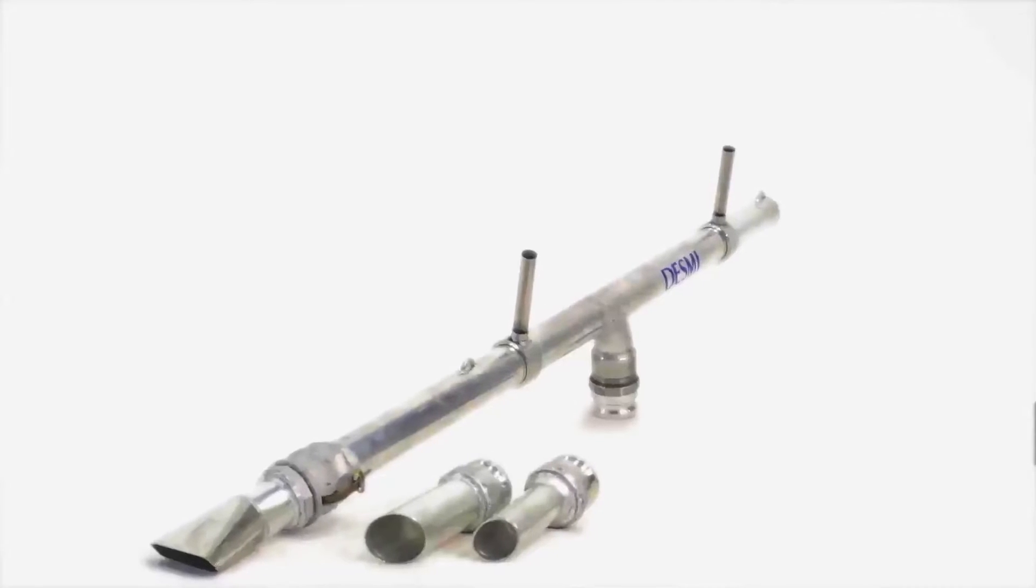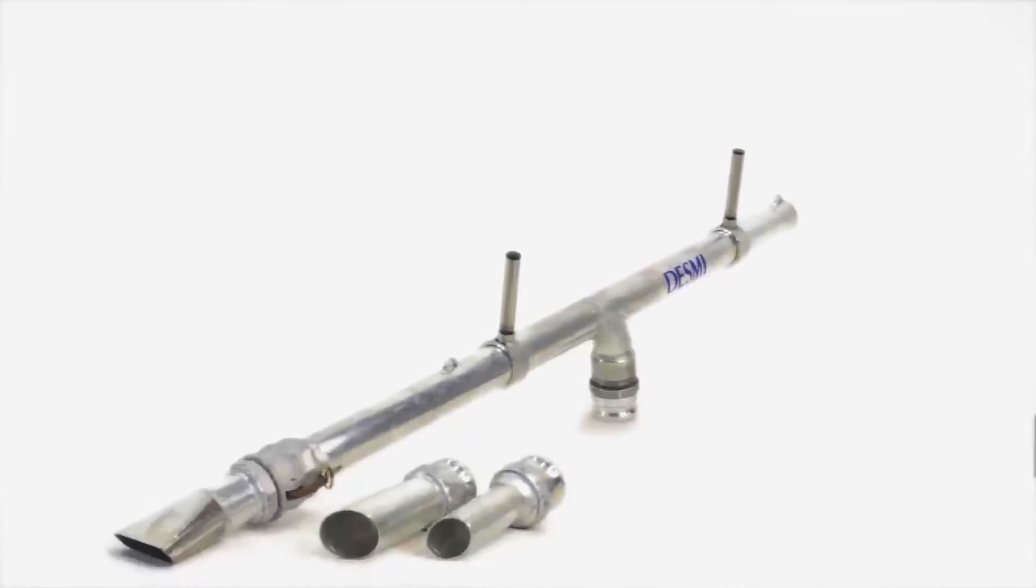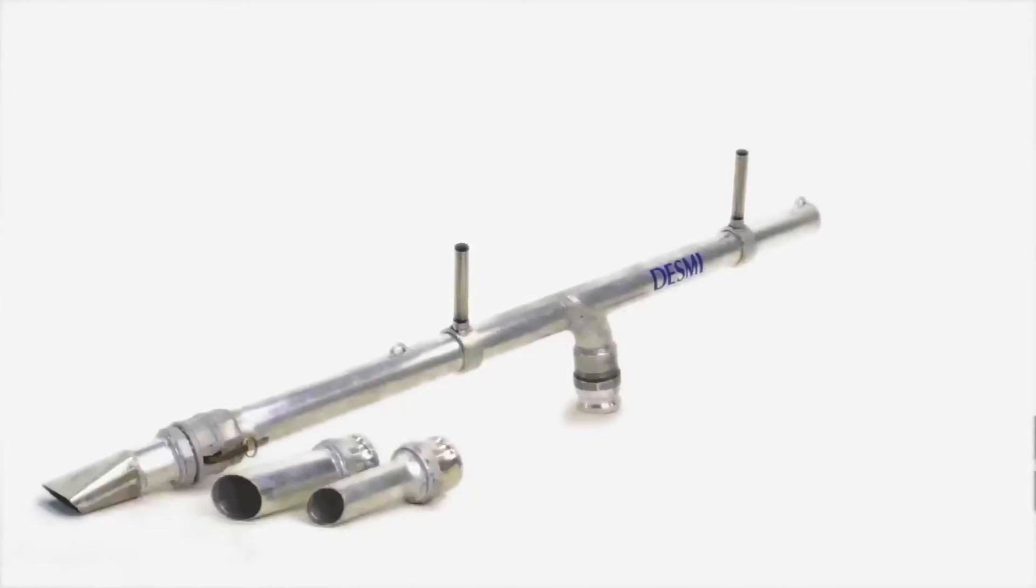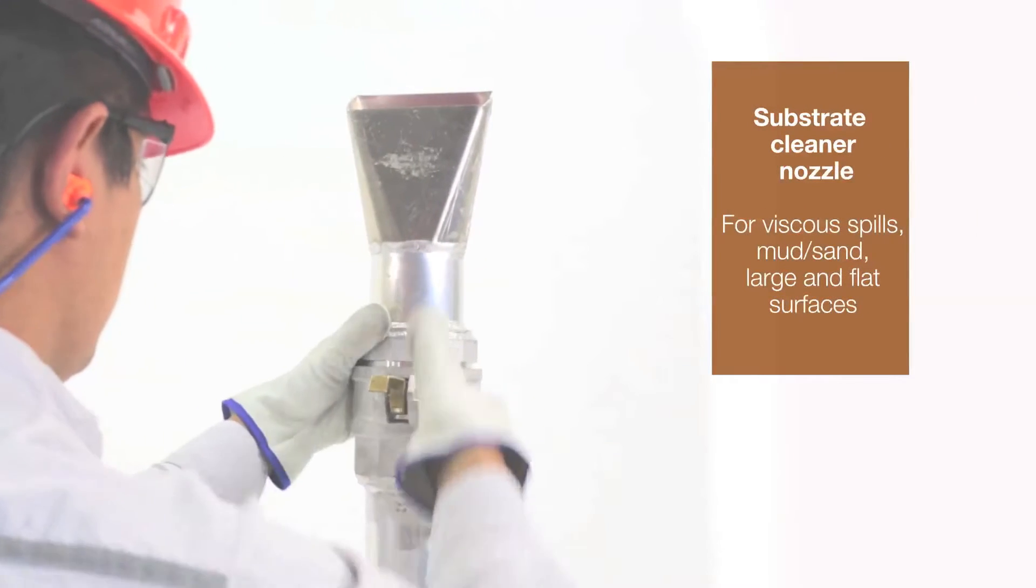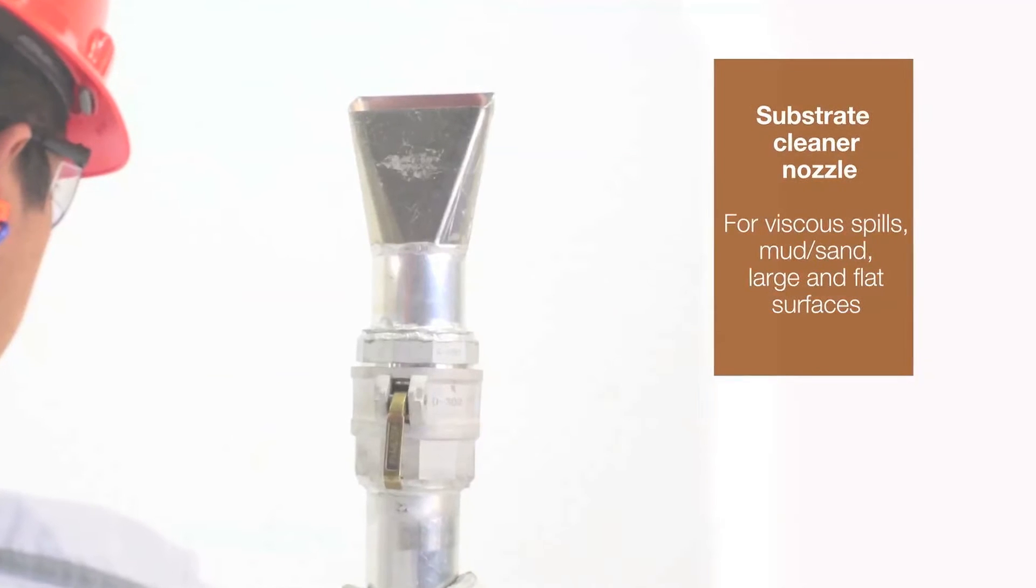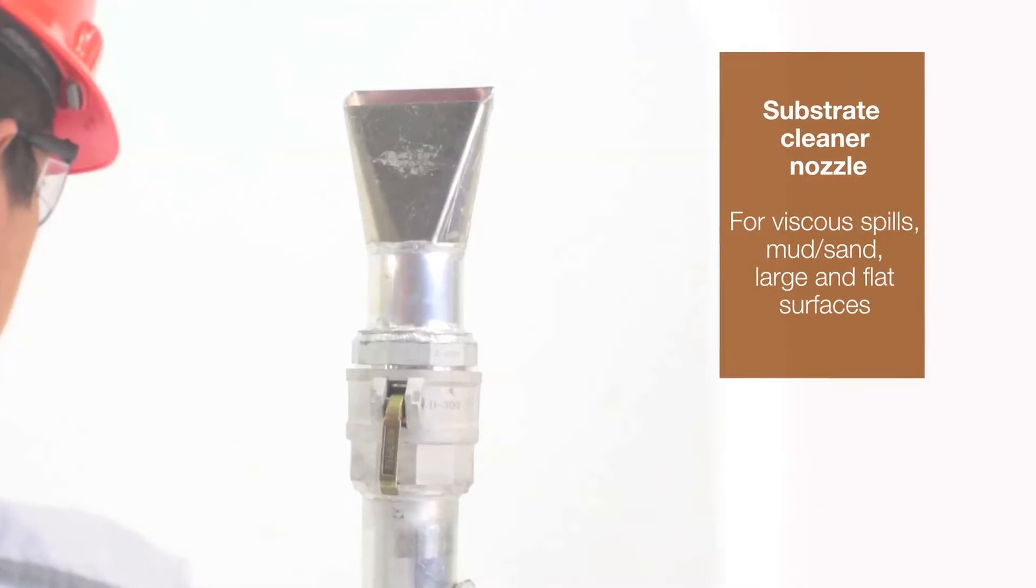The Rovac MK3 vacuum system also includes an aluminum handheld suction lens with three different aluminum nozzles. Choose the most suitable nozzle for the job: viscous spillage on mud, sand, larger or deeper pools of pollution, larger solids or contaminated seaweed or other vegetation.